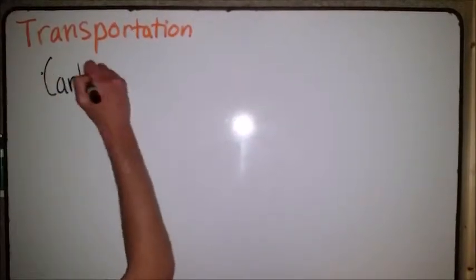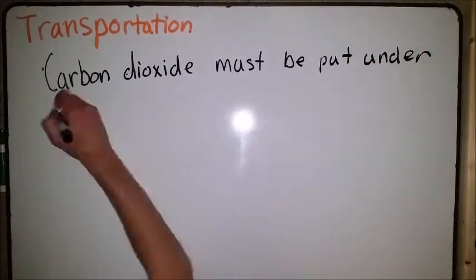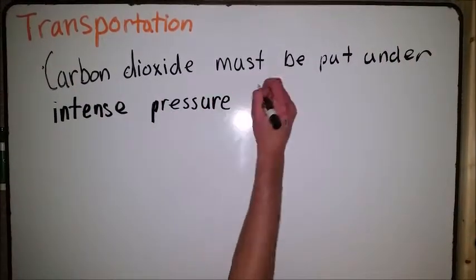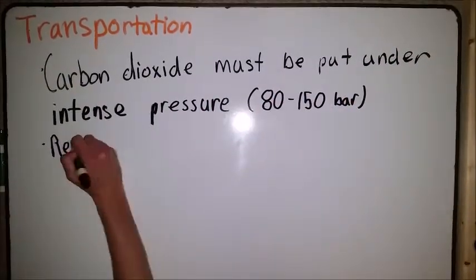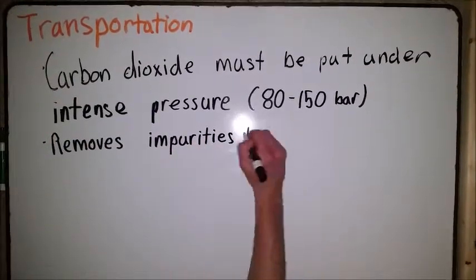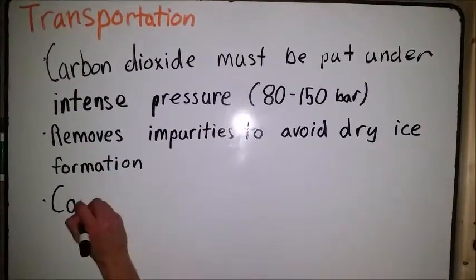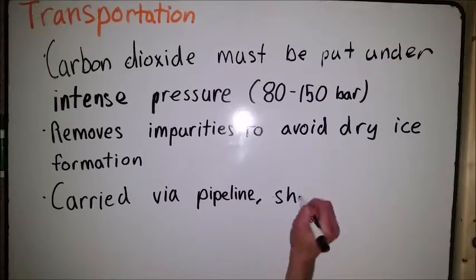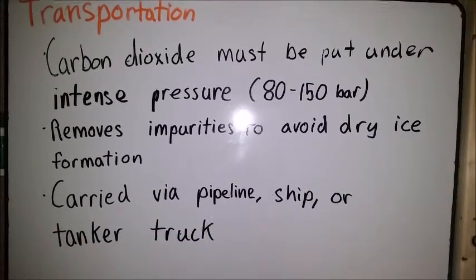Before being transported, the carbon must be put under intense pressure and impurities need to be removed to avoid dry ice formation. The carbon dioxide can then be transported via pipeline, ship, or tanker truck for final storage.